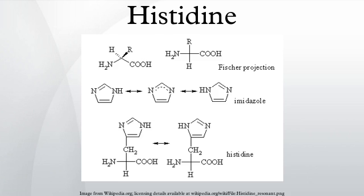Histidine is an α-amino acid with an imidazole functional group. It is one of the 23 proteinogenic amino acids. Its codons are CAU and CAC. Histidine was first isolated by German physician Albrecht Kossel in 1896. Histidine is an essential amino acid in humans and other mammals.